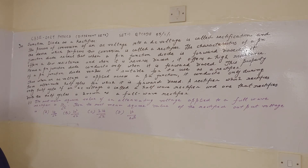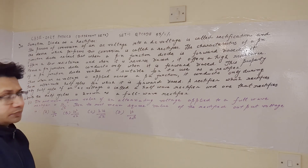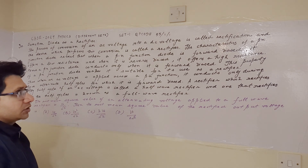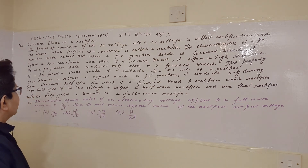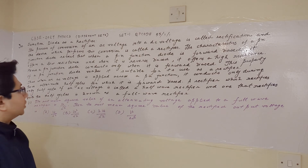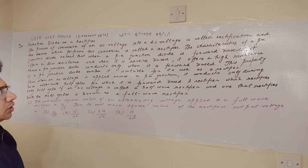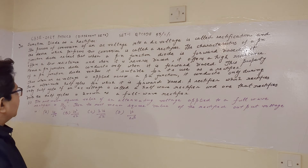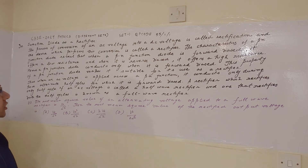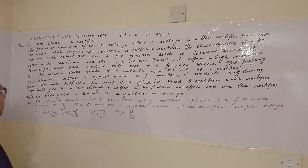The characteristic of a PN junction diode reveals that when a PN junction diode is forward biased it offers a low resistance, and when it is reverse biased it offers a high resistance. As a PN junction diode conducts only when it is forward biased, this property makes it suitable for use as a rectifier. Thus when an AC voltage is applied across a PN junction, it conducts only during those alternate half cycles for which it is forward biased.